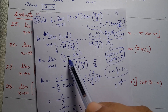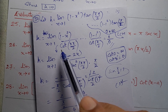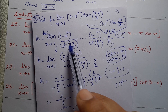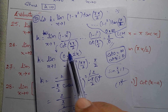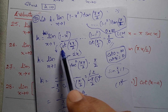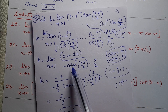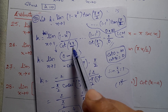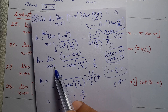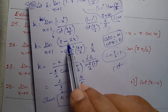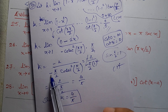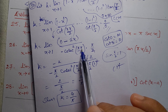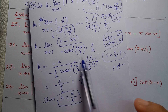Differentiation: 1 differentiates to 0; minus x squared differentiates to minus 2x. Differentiation of cot(πx/2): we apply the chain rule. The overall differentiation of cot(anything) is minus cosecant squared of that thing. Then we multiply by the inner derivative: differentiation of πx/2 is π/2. So the denominator becomes minus π/2 times cosecant squared(πx/2). Now substitute x equal to 1: numerator is minus 2 times 1 = minus 2; denominator is minus π/2 times cosecant squared(π/2). The negatives cancel.